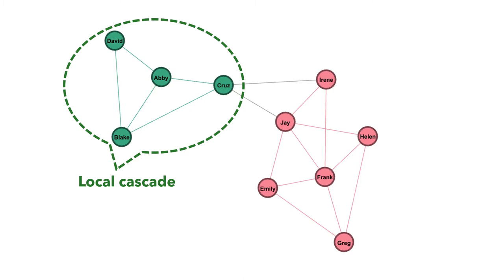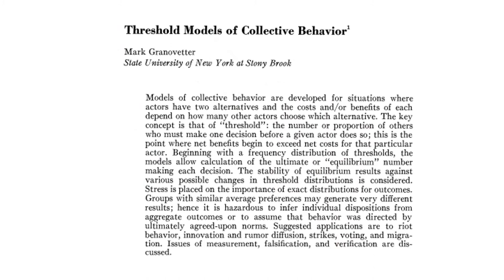With what we've learned about social networks, how do you start an information cascade? You first need to know the social structure of your target population — who is connected with whom, and what is the tie strength of each pair of nodes. If a network is not well connected, the cascade is constrained. But it's not enough to know just the social structure; you also need to pay attention to node attributes, and a key attribute here is each node's threshold.